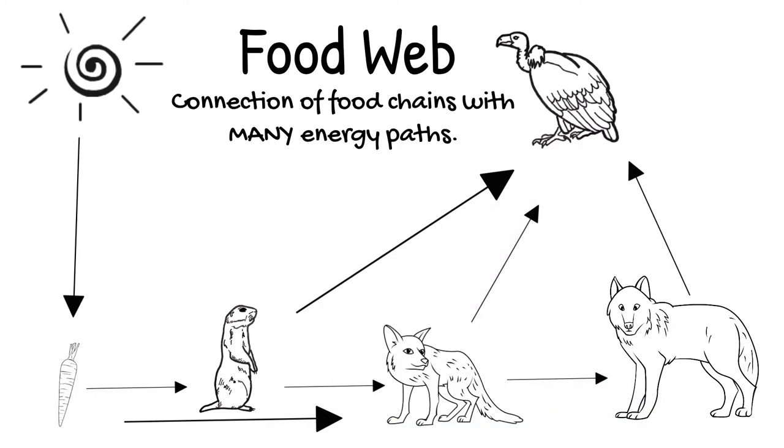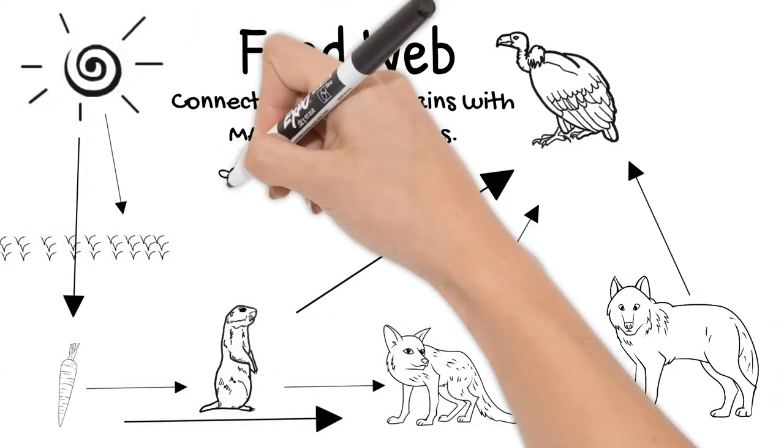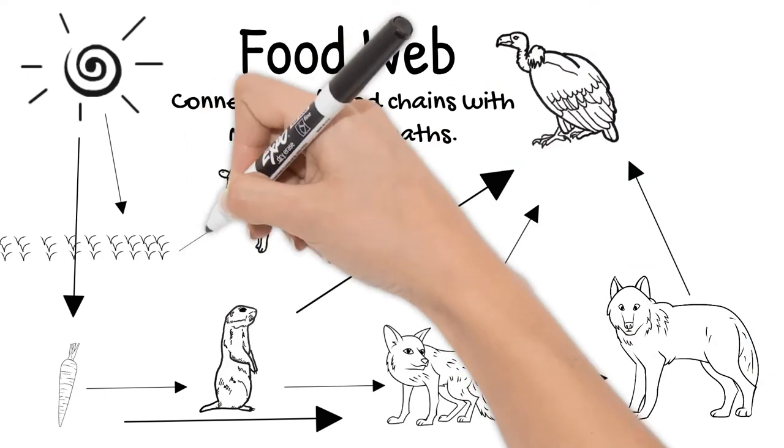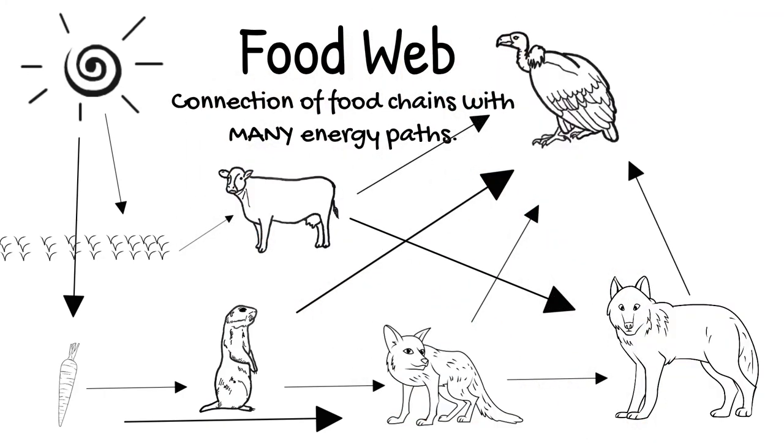We can also add other organisms to our food web that would be in this ecosystem. Grass would also gain energy from the sun, and a cow would eat that grass. Then wolves or vultures might eat that cow. Now we have a food web.